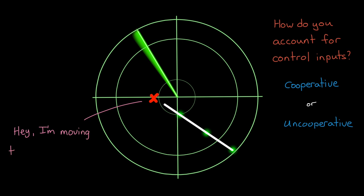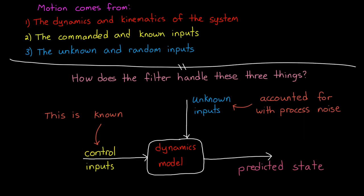A cooperative object shares information with the tracking filter. So the airplane would share the commands it was sending to the engines and the control surfaces, and therefore tracking a cooperative object is pretty similar to just flying it ourselves. Uncooperative objects, however, don't share their control inputs, and so we have to treat them as additional unknown disturbances.